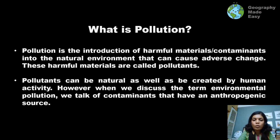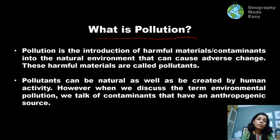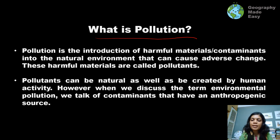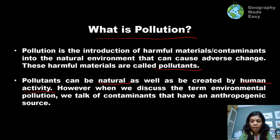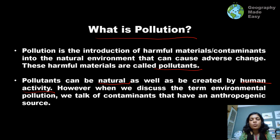Firstly, we will talk about what is the meaning of pollution. Whenever we introduce some harmful material into the natural environment which creates an adverse impact on the environment, it is called pollution, and the particular material being introduced is called the pollutant. Pollutants can be of two types: natural, and those created by human or anthropogenic activities. However, whenever we discuss environmental pollution, we are basically taking into consideration the anthropogenic or human-induced sources of pollution.